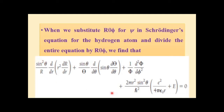This substitution is an exercise for you. Using the last video, substitute capital R times capital Theta times capital Phi in place of psi, then divide all terms of that equation by capital R, capital Theta, capital Phi. You should obtain an equation containing the term sine²θ divided by capital R as one of the results.